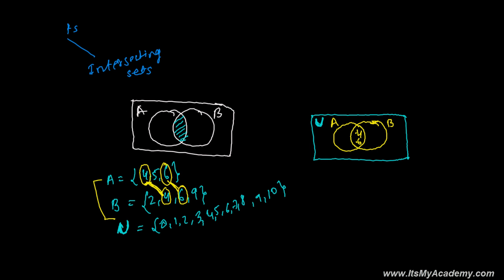Once you finish the common part, write the remaining elements of each subset. In subset A, we had 4, 5, 6 — 4 and 6 are already in the common region, so 5 goes in the A-only section. In B, we had 2, 4, 6, 9 — 4 and 6 are placed, so 2 and 9 go in the B-only section. Whatever elements remain — 0, 1, 3, 7, 8 — are written in the outer region of U outside both A and B.